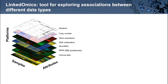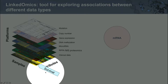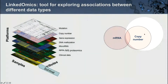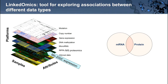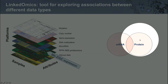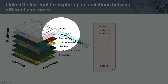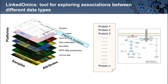LinkedOmics is not just a collection of different types of data — it's also a tool for exploring associations between different data sets. For example, we might be interested in which genes are upregulated or downregulated in patients with poor prognosis, how changes in gene expression correlate with copy number changes, or the correlation between microRNA expression and protein expression. We might also look at the effect of a mutation in a gene on protein levels in the pathway in which that gene is mutated.